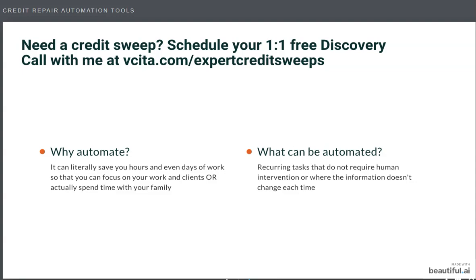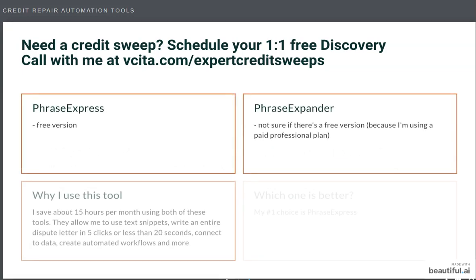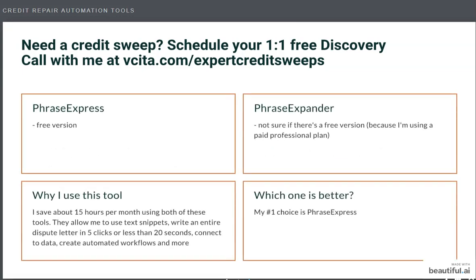Let me give you a credit repair example. When you're using templates — and it doesn't matter what type — anything that is stored in the computer where you don't need to write it right then, those things can be automated. You're just taking information from a database and exporting it into the letter. But when you're using factual disputes, you have to take those facts directly from the credit report — that cannot be automated, that requires human intervention. So keep that in mind when trying to use these or anything else for automation.